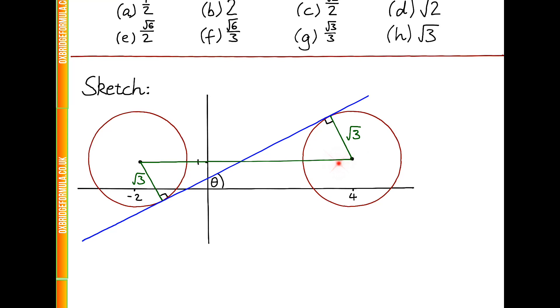and by the symmetry of this situation, we can see that the line L will need to intersect this line halfway along, and this line goes from minus 2 to 4, so it has a length of 6, and therefore it has a length 3 from here to here.